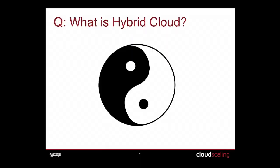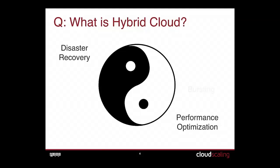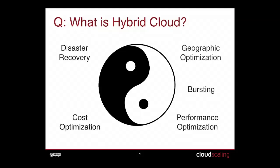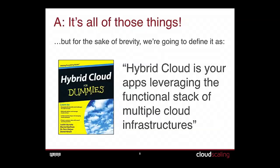What is hybrid cloud? The real answer is it's different for everybody. It can be your application tier in public cloud and, for PCI compliance or regulations, your data tier in a private cloud. It could be a containerized app running in a couple of different environments, or your app in one cloud with a hot/cold failover in another. We've agreed on a definition: hybrid cloud is your apps leveraging the functional stack of multiple cloud infrastructures.